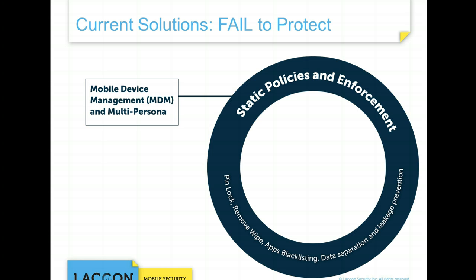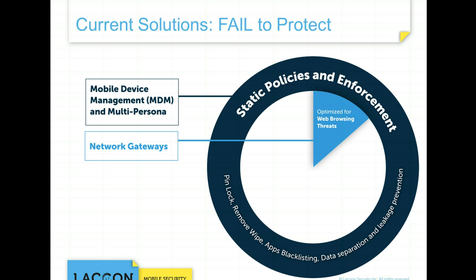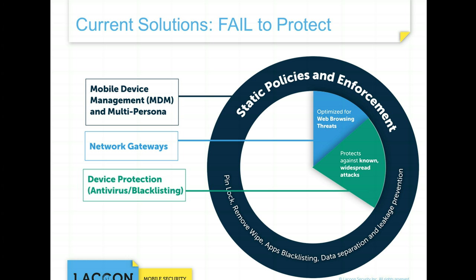How can you mitigate these threats? The first thing is to recognize that current solutions designed to address the BYOD challenge fail to protect against these risks. For example, mobile device management, which performs mobile policy management and enforcement, contains only static policies that solve simple security problems — such as ensuring users use a PIN to unlock their device or cannot download specific apps. Network gateways enforce network-based protection to block attacks from coming into the network, but these solutions are mainly optimized for web browsing threats. On-device protection such as antivirus does not exist for the iOS platform, only for Android, and even then is very limited in scope, detecting only known threats.